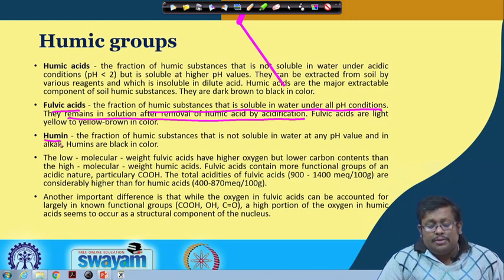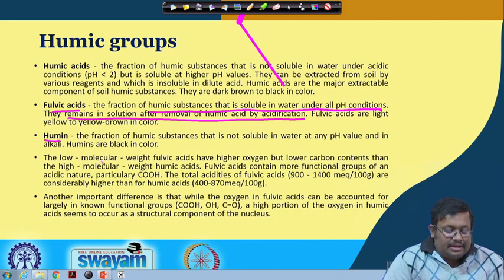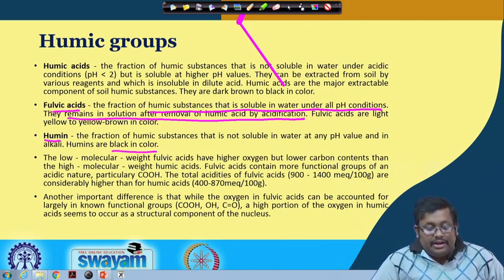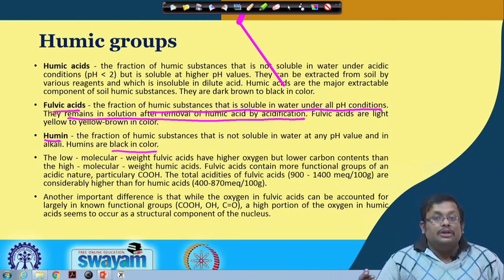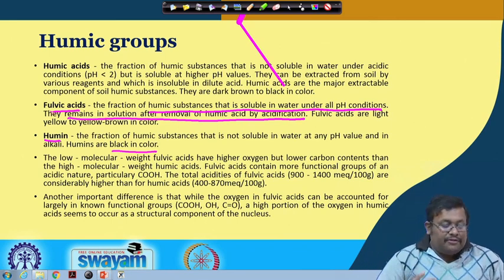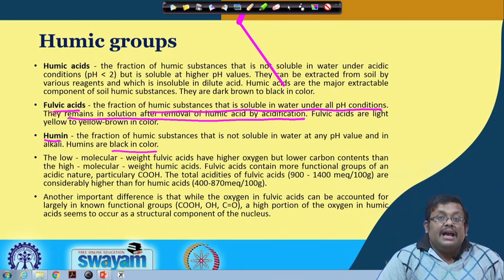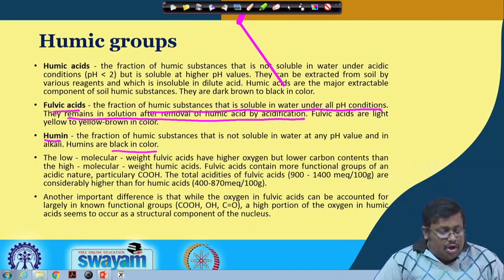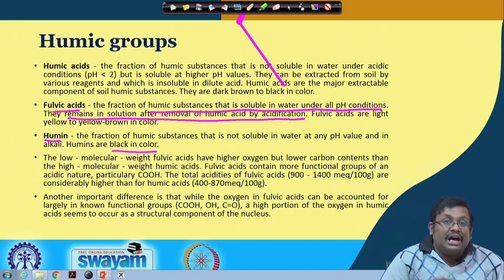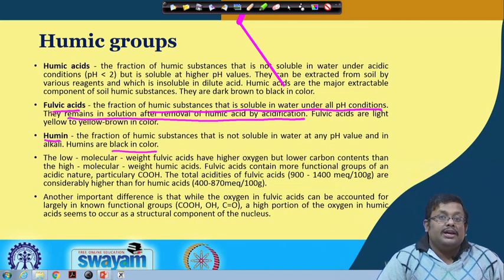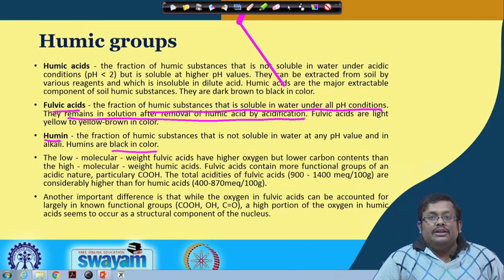The third fraction is humine - the fraction of humic substances that is not soluble in water at any pH value or in any alkali. Humines are black in colour. Fulvic acid has low molecular weight with high oxygen but lower carbon content than humic acid. Fulvic acid contains more functional groups of an acidic nature; total acidity of fulvic acid is 900 to 1400 milliequivalents per 100 grams, considerably higher than humic acid which has only 400 to 870 milliequivalents per 100 grams.